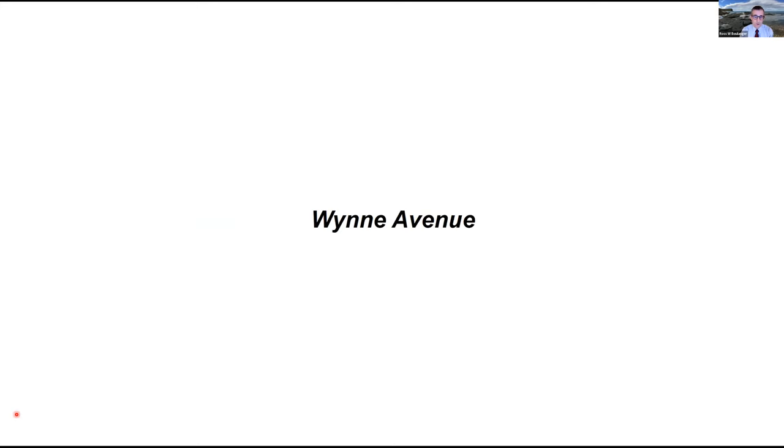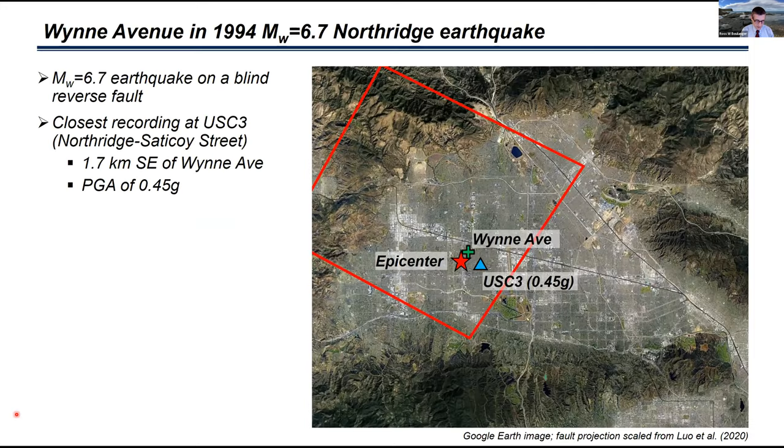First a little background on Wynn Avenue. Wynn Avenue is located in the San Fernando Valley, which is north of Los Angeles in California. It's very close to the epicenter of the magnitude 6.7 Northridge earthquake. We have a nearby recording station, the USC3 station is about 1.7 kilometers away, similar location relative to the fault surface, where a peak ground acceleration of about 0.45 g was recorded.